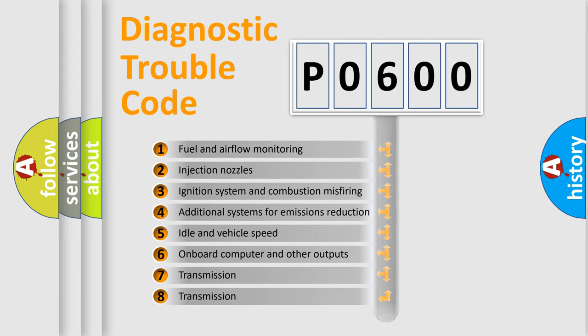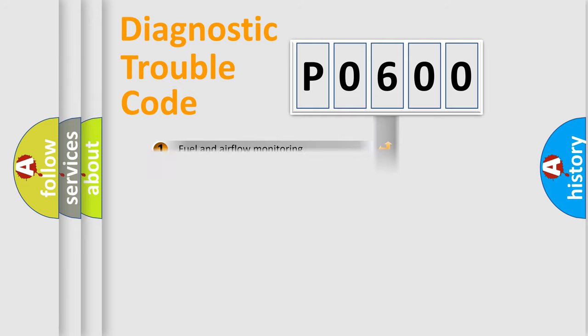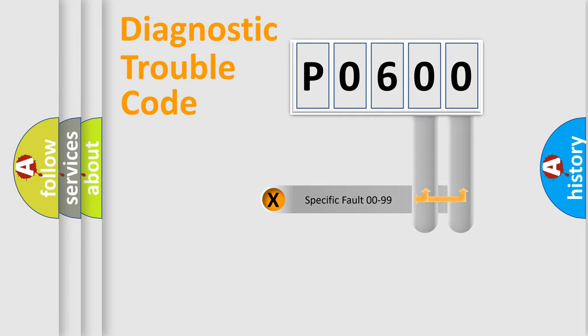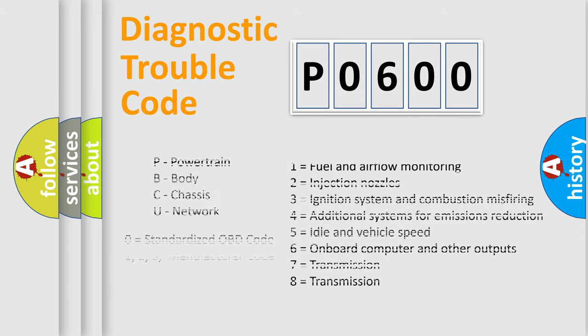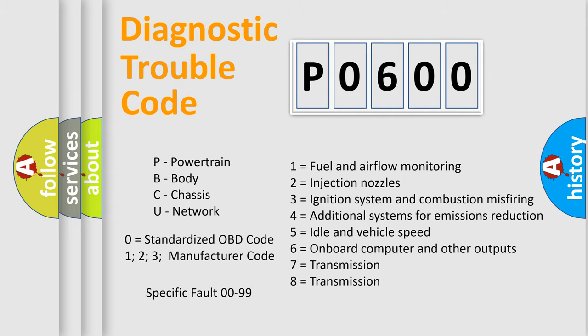The distribution shown is valid only for the standardized DTC code. Only the last two characters define the specific fault of the group. Let's not forget that such a division is valid only if the second character code is expressed by the number zero.